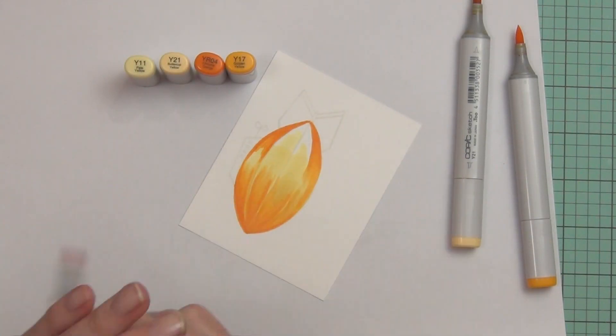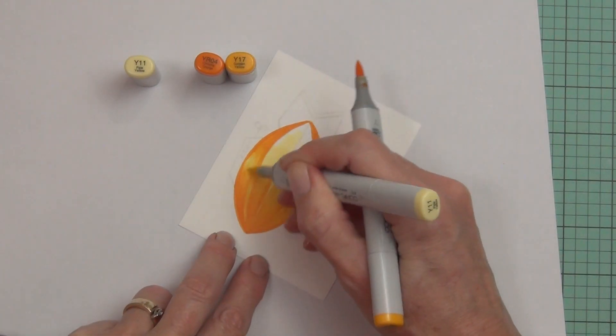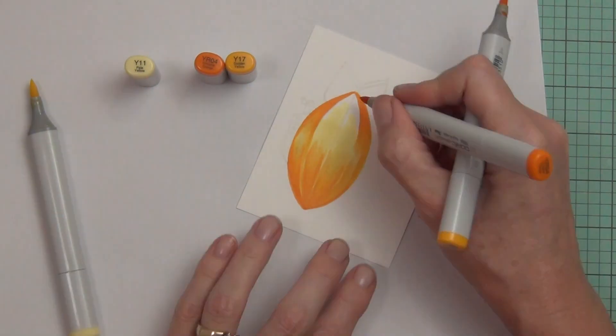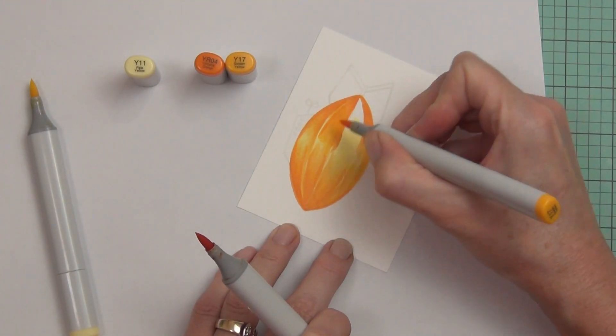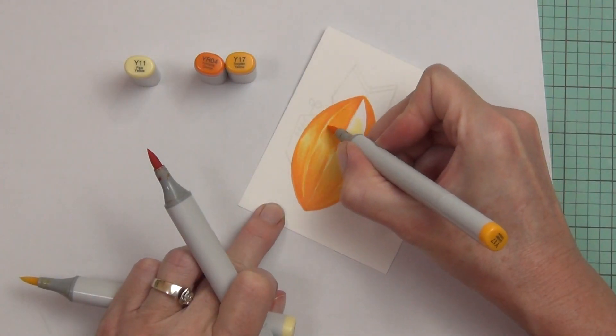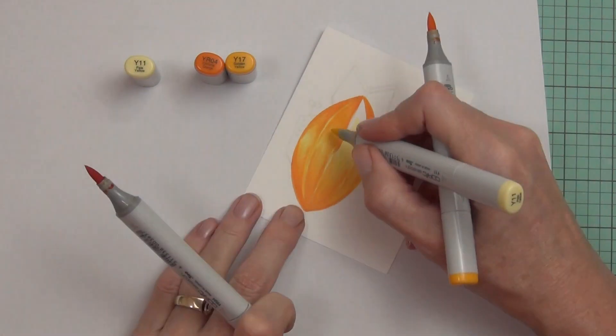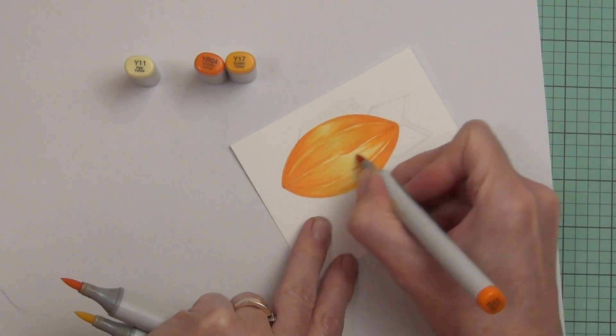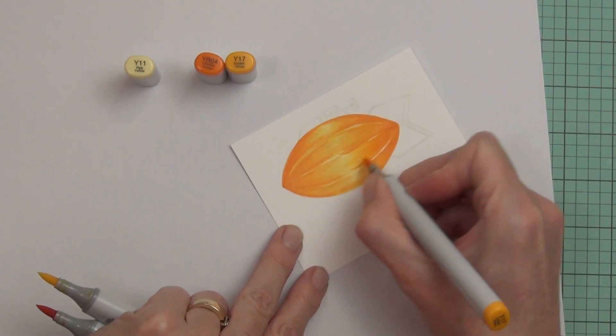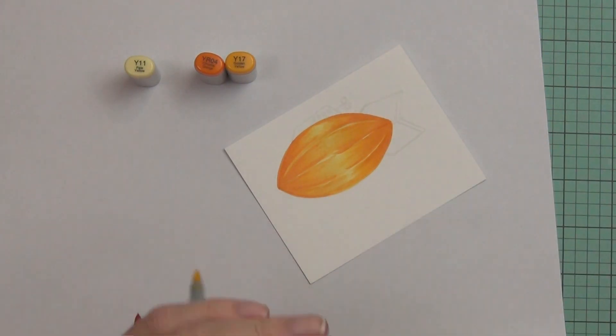This ship ended up pretty cool. I tried the Y21 but it was too kind of browny-yellow, so I ended up just sticking with these three colors here and made the center of the ship the highlight because it's going to look a little bit rounded. I think you could also call this a blimp.